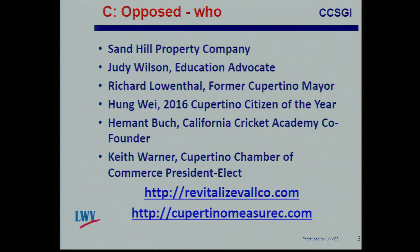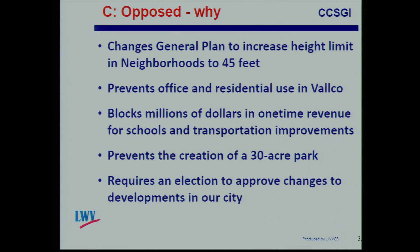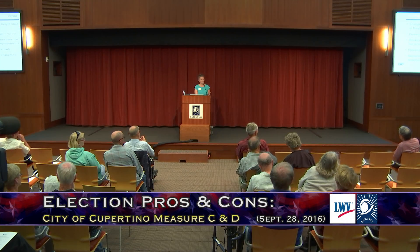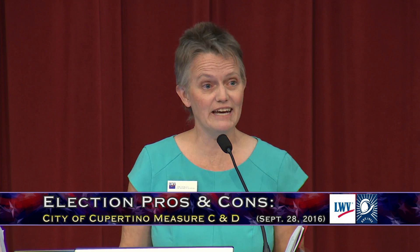People opposed include Sandhill Property Company, the Valco developer, Judy Wilson, Richard Lowenthal, Hung Wei, and Keith Warner, who direct you to revitalizevalco.com and cupertinomeasurec.com. They say it changes the general plan to increase the height limit in neighborhoods to 45 feet, that it prevents office and residential use in Valco, that it blocks millions of dollars in one-time revenue for schools and transportation improvements and prevents the creation of a 30-acre park, and that it requires an election to approve changes to developments in the city. As we've said, C and D have a lot to do with each other, so we'll continue straight on into D and then consider the combination.